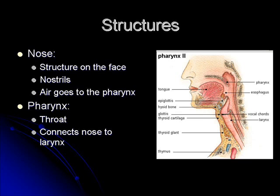Most of you are familiar with the major structures, especially the external ones. Both your nose and your mouth — which is not mentioned on this slide — are structures on your face. Your nose consists mainly of those two nostrils, and your mouth you're all familiar with. Both of these are where air enters into your system and leaves from your system.